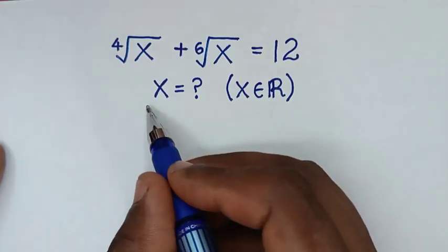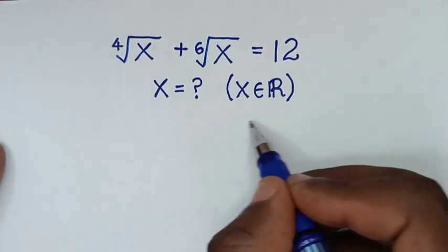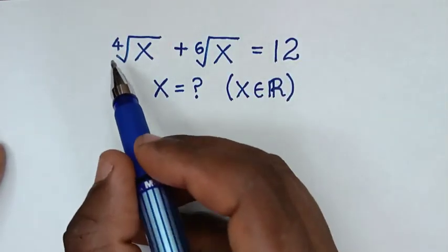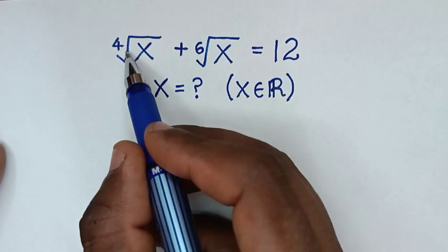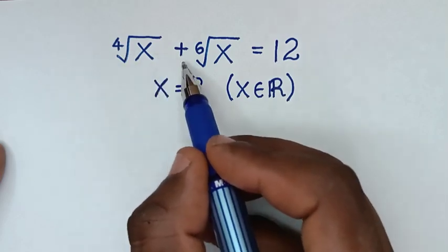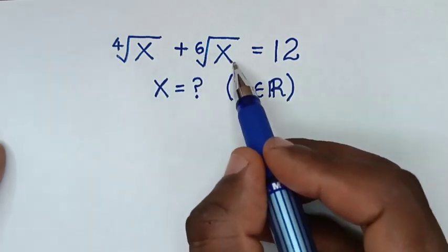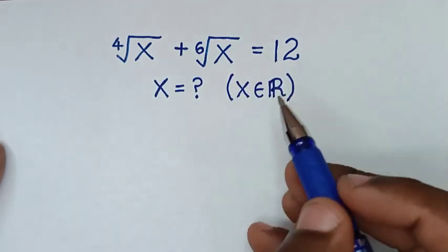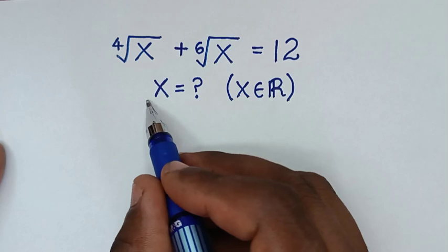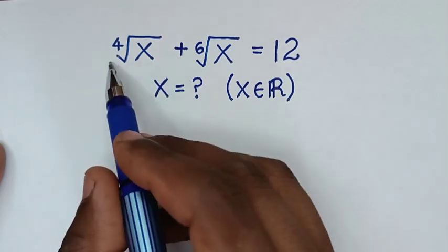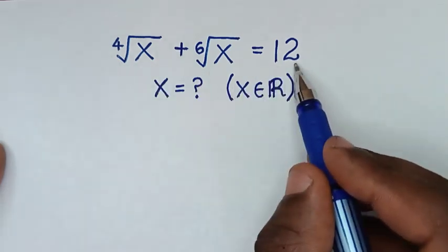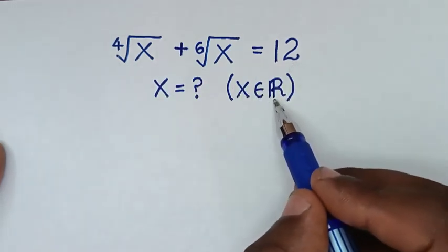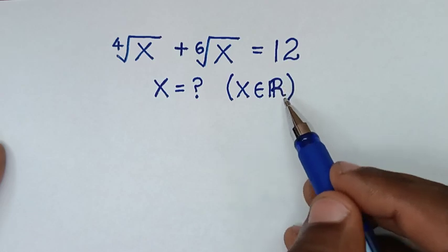Hello, you are welcome to solve this math problem, which is the 4th root of x plus the 6th root of x is equal to 12. We need to find the value of x from this equation, so that x is an element of the real numbers.